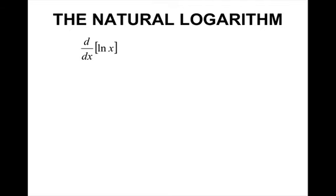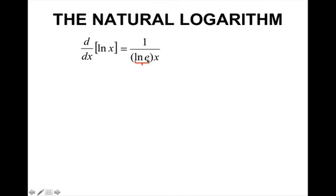So what you need to remember is that the derivative of log base b of x equals 1 over the natural log of the base times x. For the natural logarithm, if I take the derivative of the natural log of x, I get 1 over the natural log of e times x. Since the natural log of e is 1, the derivative of the natural log of x is equal to 1 over x.